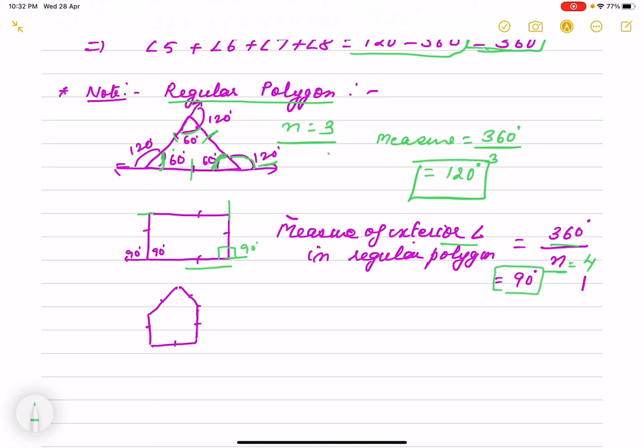So with this formula, we can find out number of sides also or number of angles also. What is unknown to you, you can use like N equals to 360 by measure of exterior angle. This way also we can find out what is unknown to you like N or angle.